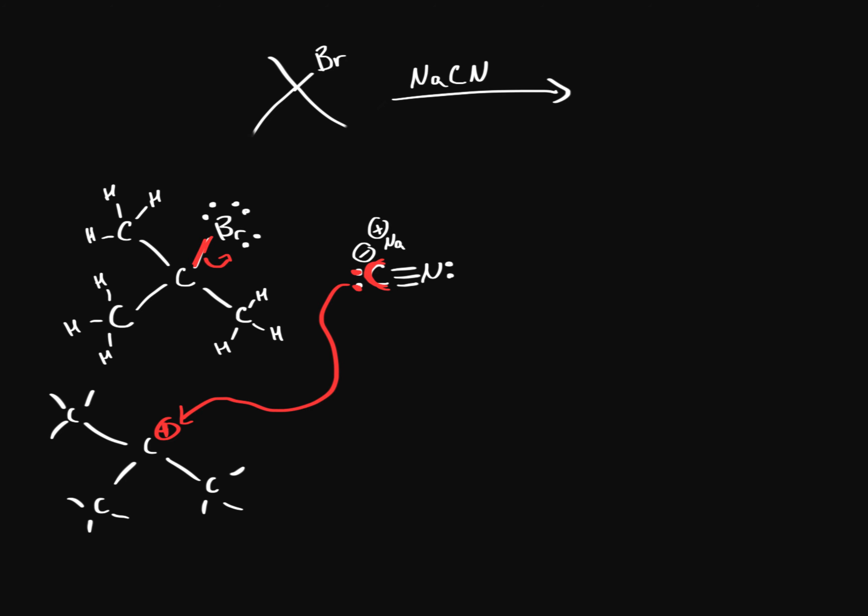And so we get a final product that looks like this where we have our three carbons remaining the same, we have our hydrogens which are just represented by lines, and then we have our new cyanide molecule on it.